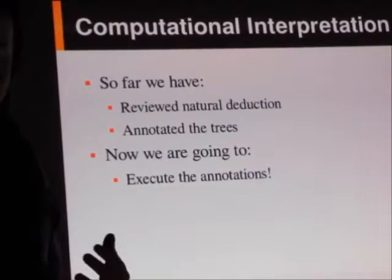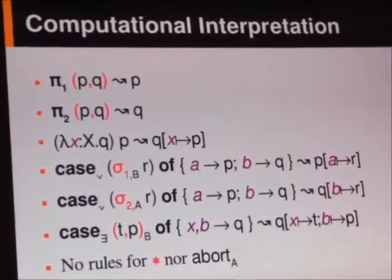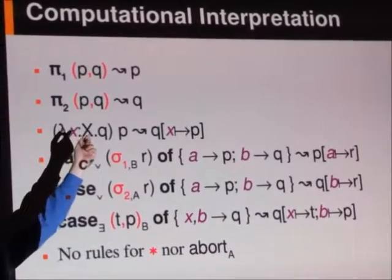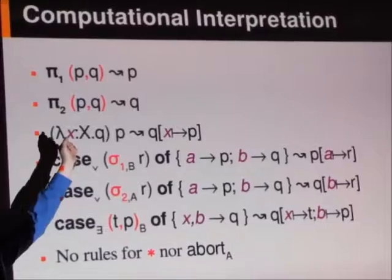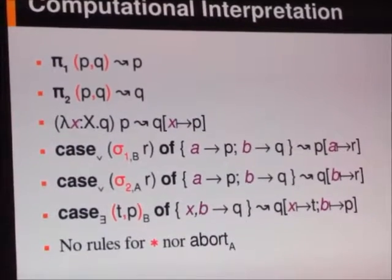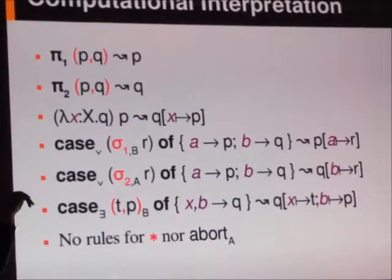So this is where we start tying in with programming. We're going to say that if you ever have pi 1 applied to the pair p comma q, that will evaluate to p. And pi 2 of p comma q will evaluate to q.